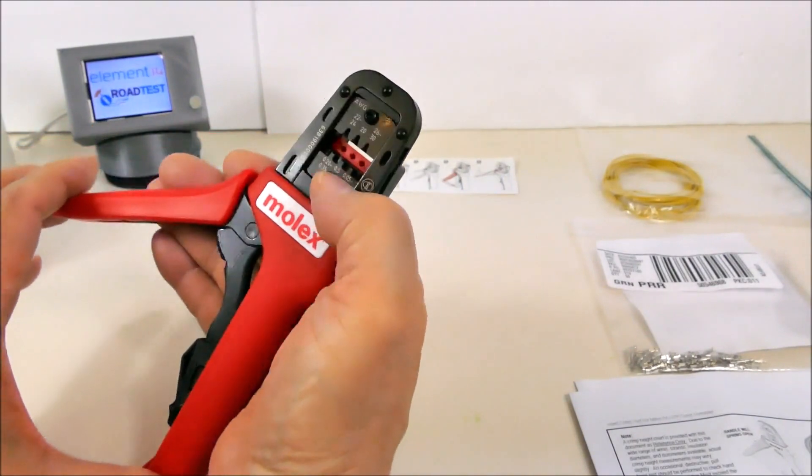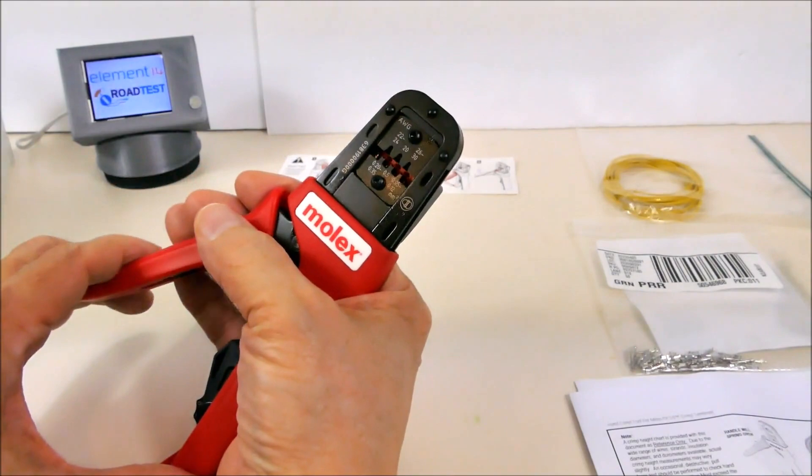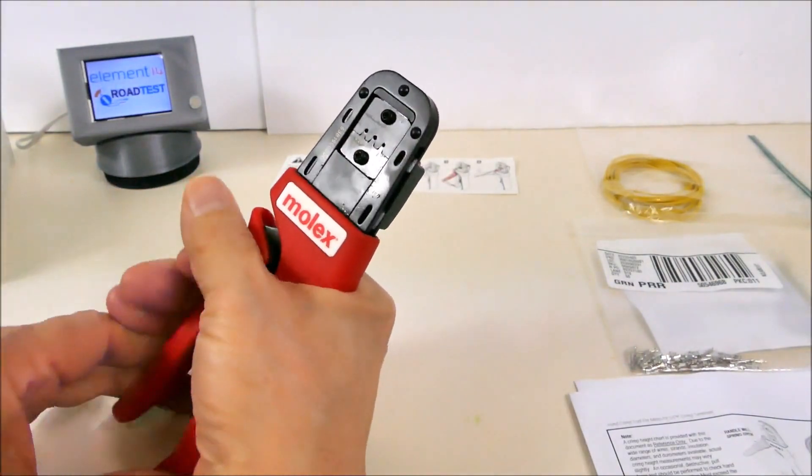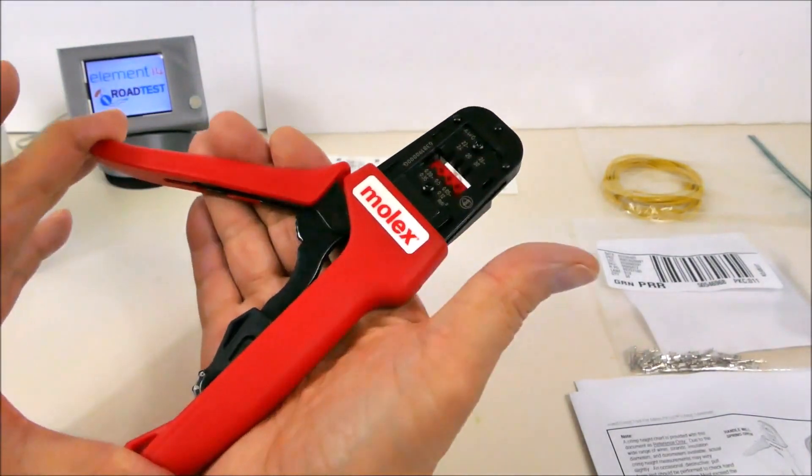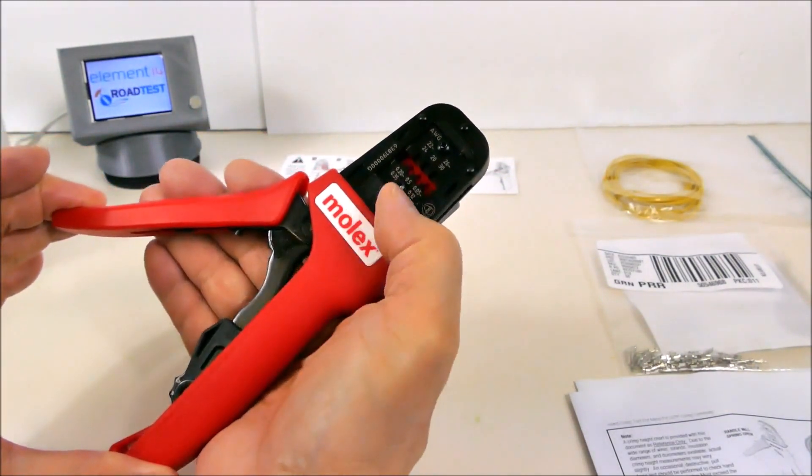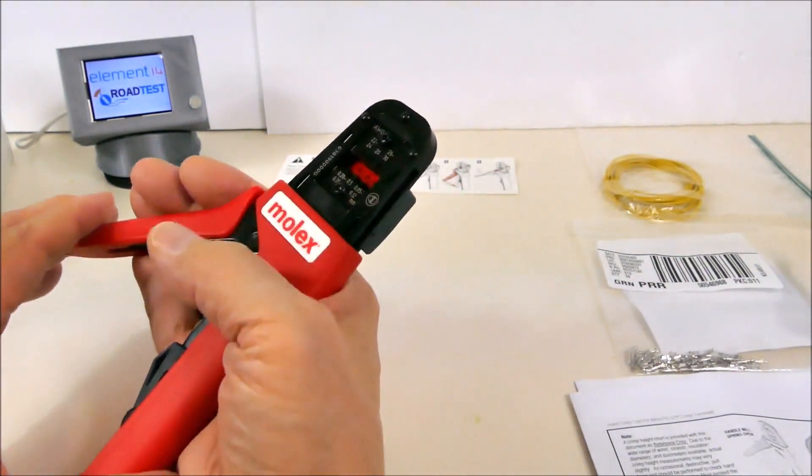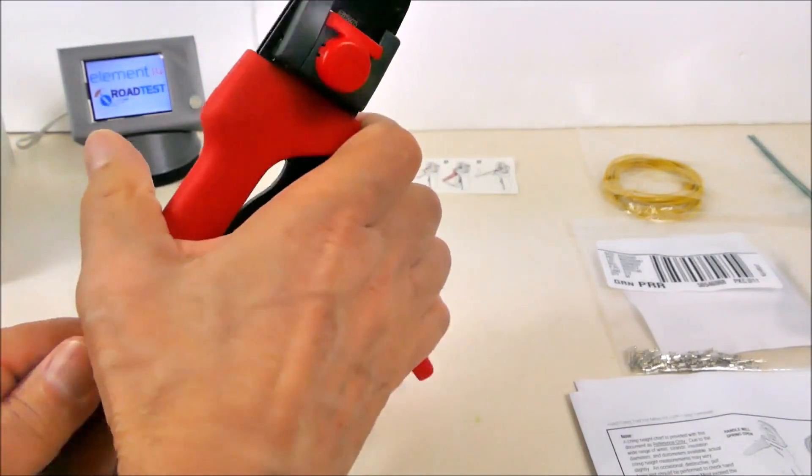You can notice that the crimping jaws actually move linearly as the handle is rotated. It translates that rotation into a linear travel for the crimping jaws.